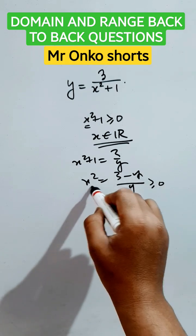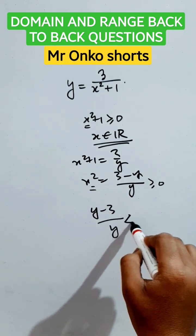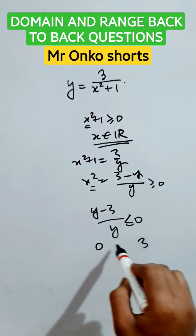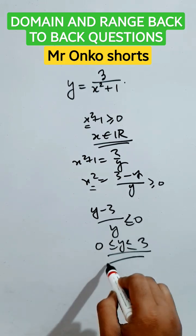So y minus three by y is less than equals to zero. Zero and three are at the extremities, so this is the range of the given function.